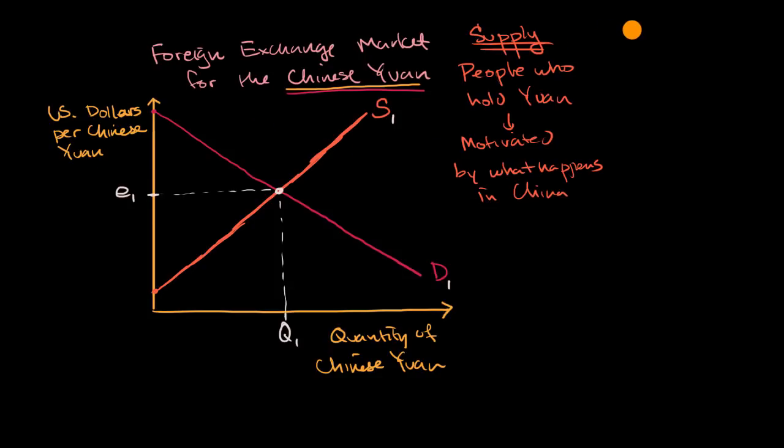And on the other hand, if we're thinking about demand, it's the other way around. These would be other people that for some reason want to convert their currency, their non-yuan currency into the yuan. So people who hold other currencies like US dollars. And so this tends to be motivated—it's possible that someone in Beijing is holding dollars or has a dollar bank account, but for the most part it's going to be motivated by other countries.